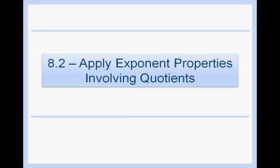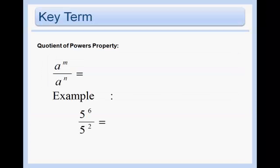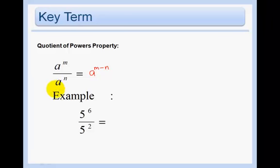8.2 Apply Exponent Properties Involving Quotients. Our property says that a to the m power over a to the n power equals a to the m minus n power. The rule is basically saying that if we have the same bases and we're dividing with exponents with the same bases, then we subtract the exponents.